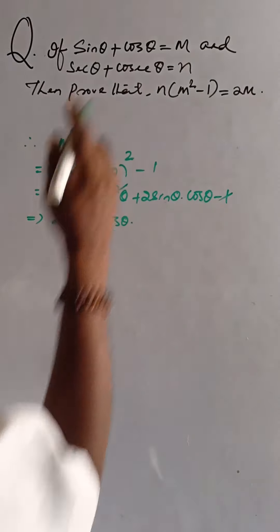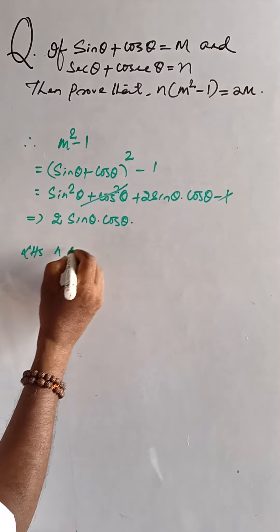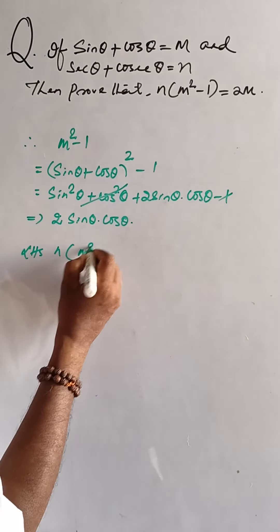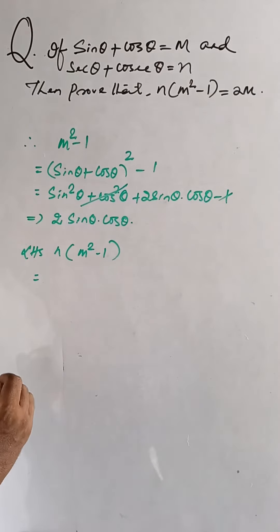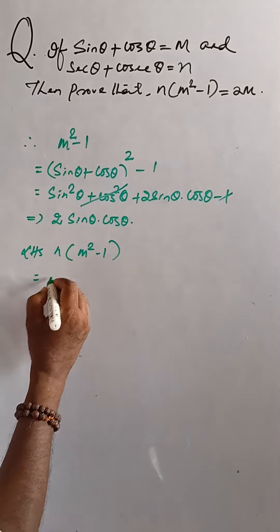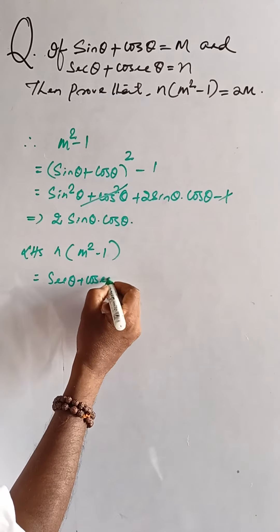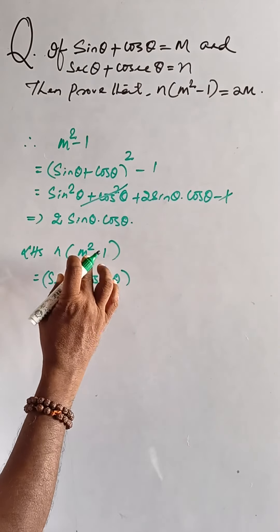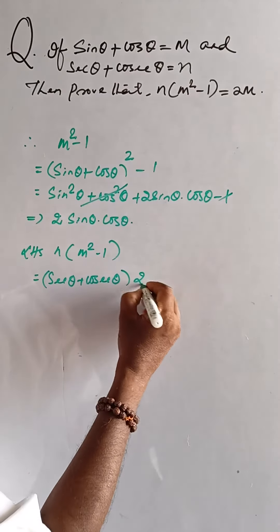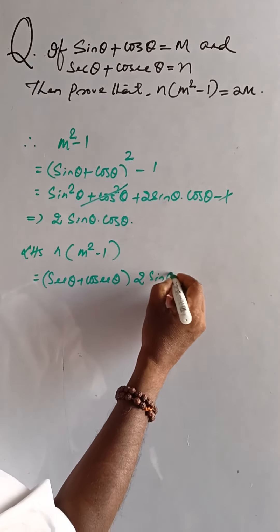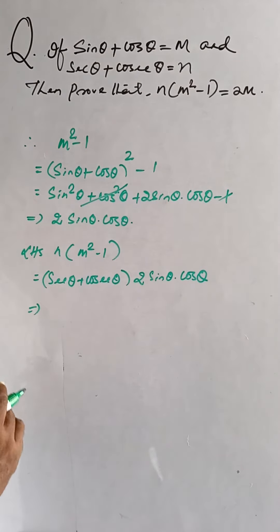From the left-hand side, the expression is n(m² − 1). Here n = sec θ + cosec θ, and m² − 1 = 2sinθcosθ.